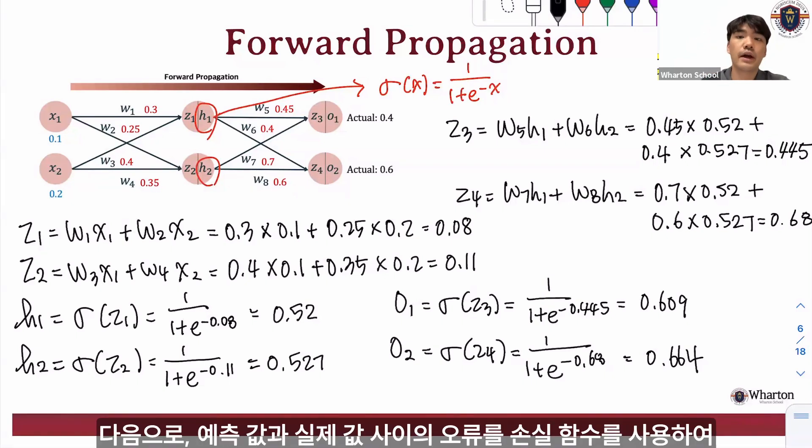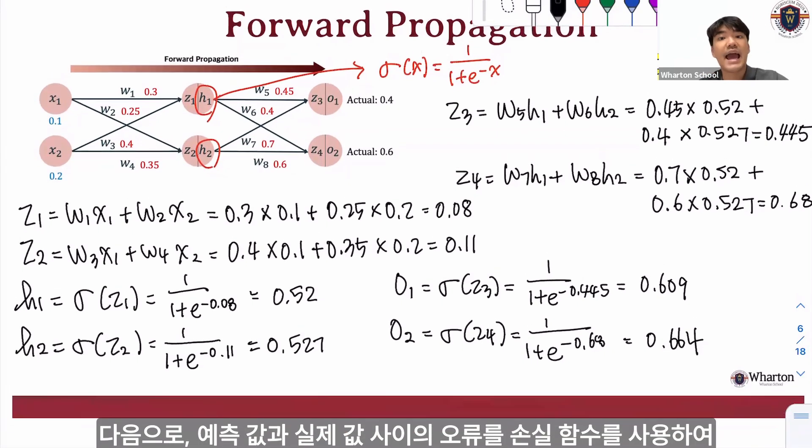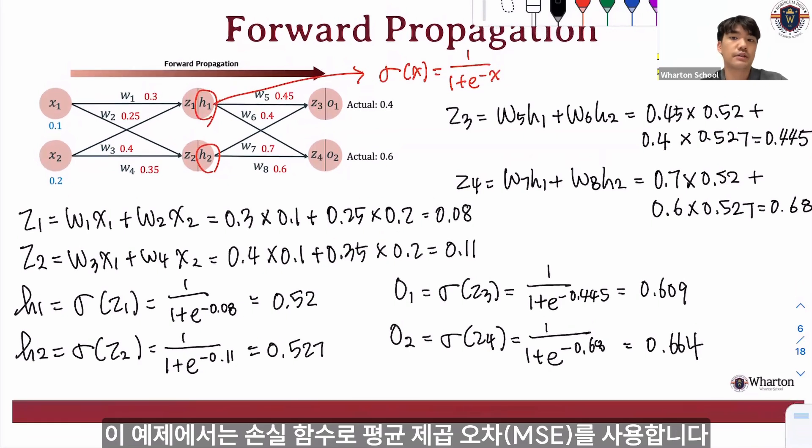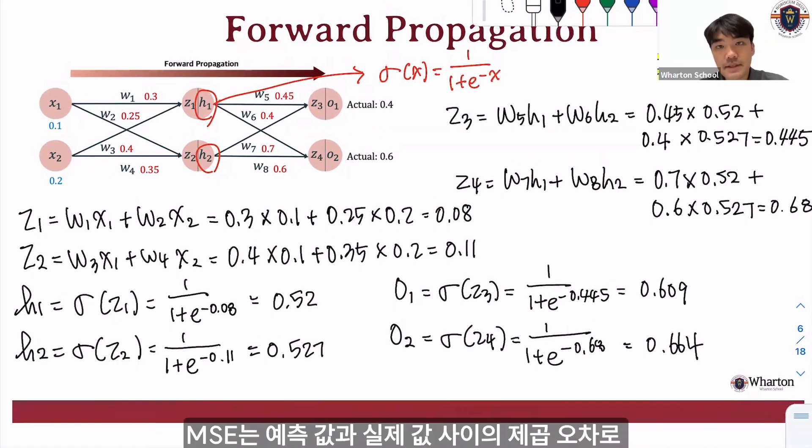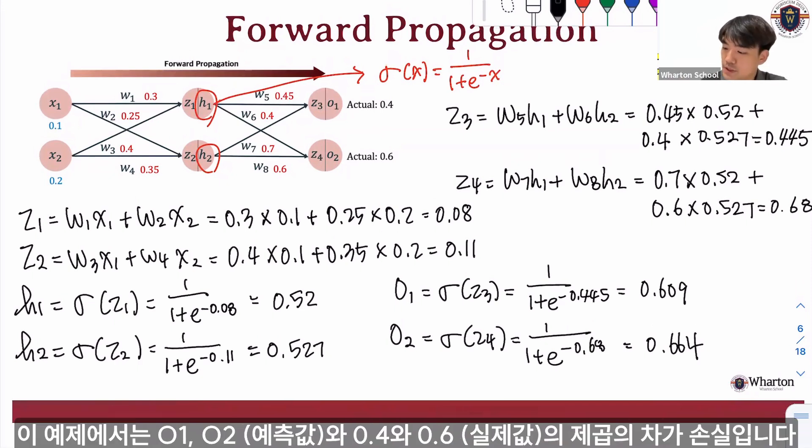So we calculate the error between the predicted values and the actual values using the error function. In this example, we use MSE, mean squared error, as the loss function. MSE is the squared error between the predicted value here, which is o1 and o2, and the actual value, as you can see, 0.4 and 0.6 here.